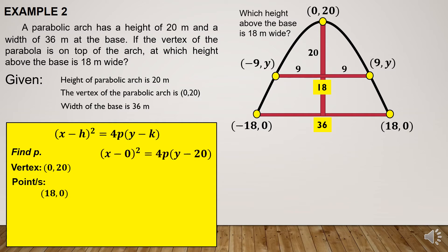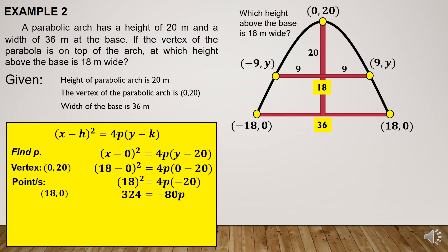Let us now substitute the values, starting with h and k. We have the quantity (x minus 0) squared is equal to 4p times (y minus 20). Substituting x = 18 and y = 0, we obtain 18 squared is equal to 4p times negative 20. Simplifying: 324 equals negative 80p. Dividing both sides by negative 80, the value of p is negative 4.05.